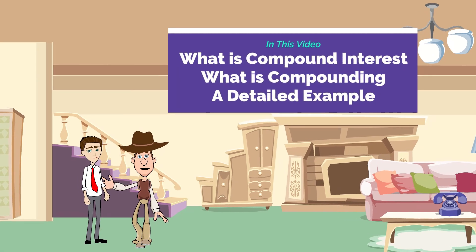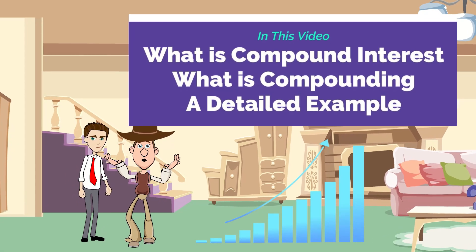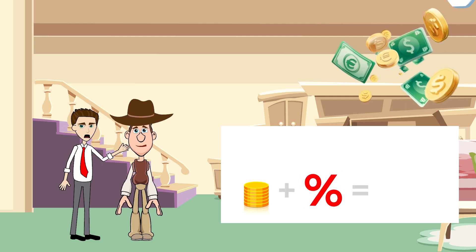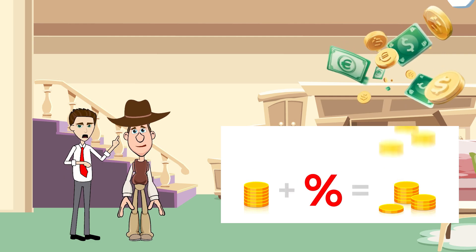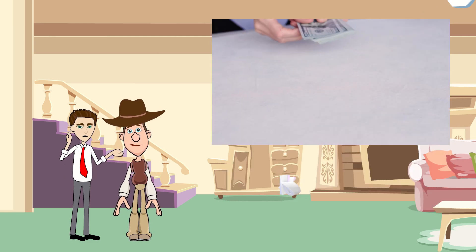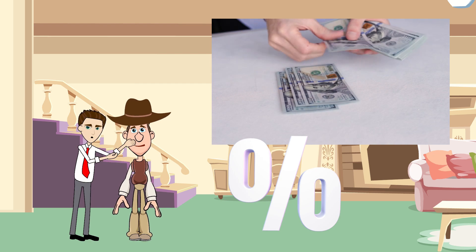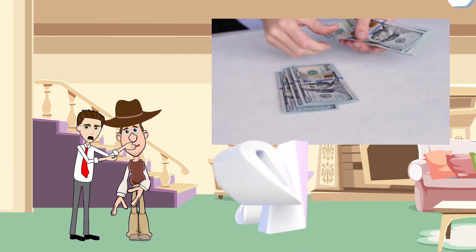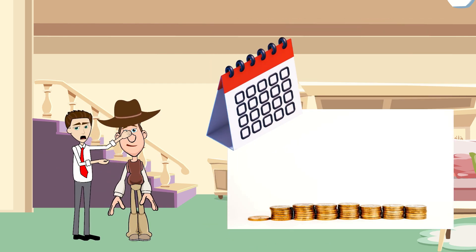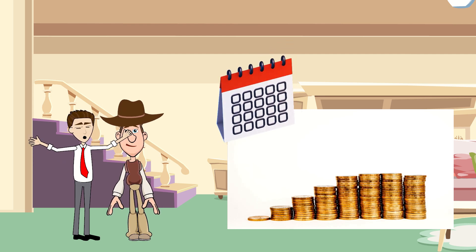Howdy WallStreetWilly! What is compound interest? In very simple terms, compound interest is interest on interest. It is the interest that applies to the initial contribution or loan, called principal, and also on accumulated interest from previous years.